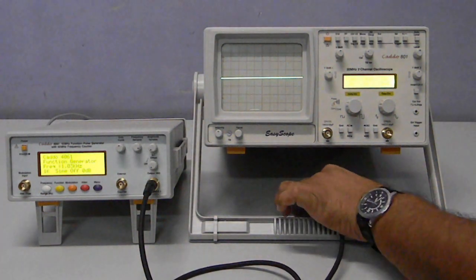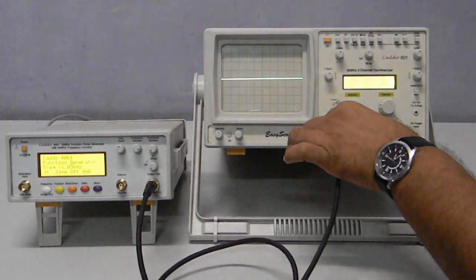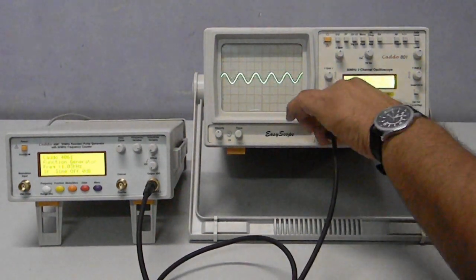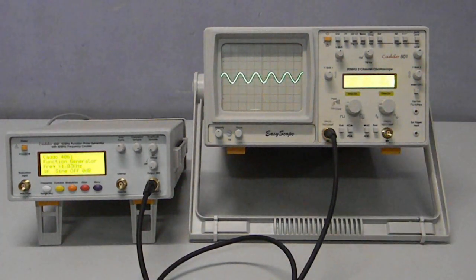Now I am giving a sine wave to the oscilloscope from a function generator. And now we observe the sine wave is at the center of the CRT.